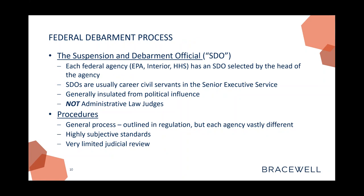So how does the process work? Each federal agency has a suspension and debarment official, selected by the head of the agency. They are career civil servants in the Senior Executive Service, which means they're insulated from politics. From time to time, companies want to bring in senators or members of Congress to lobby an agency out of a suspension or debarment — they are very offended by that and insulated from it. They're also offended when you bring in a political appointee from a higher level, because they believe these are independent decisions within their discretion that should never be influenced by politics.